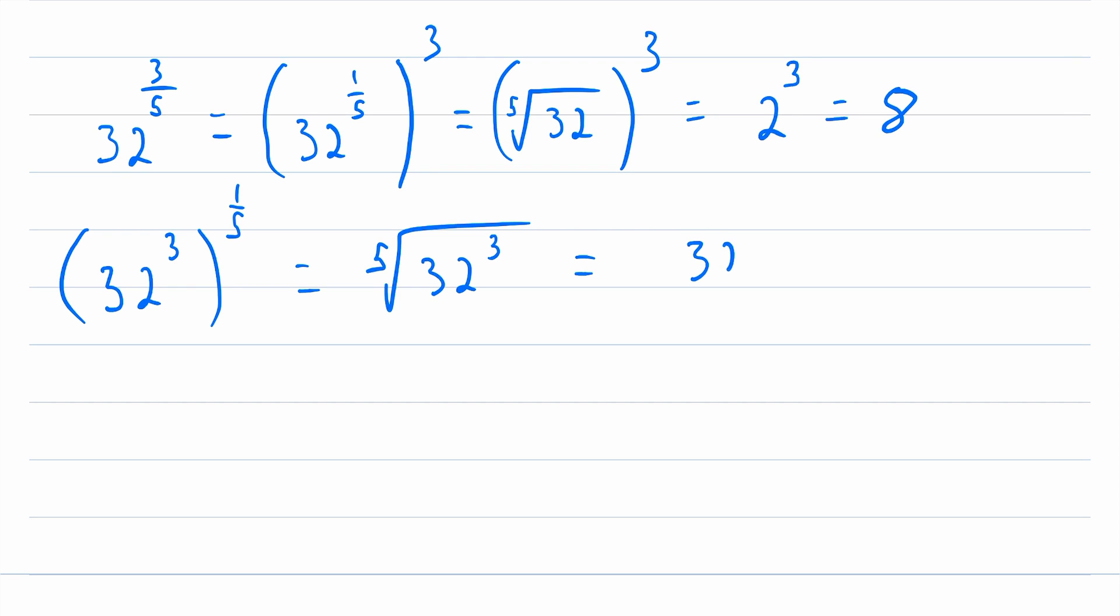I just plug 32 cubed into a calculator. It is 32,768. And then, the fifth root of this is equal to 8. Of course, I know that offhand. Everybody knows the fifth root of 32,768 off the top of their head.